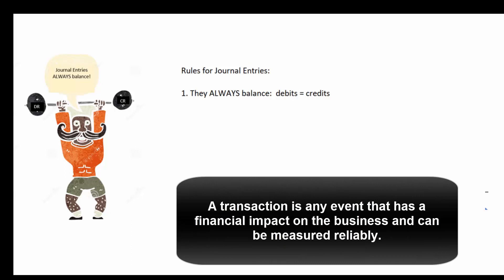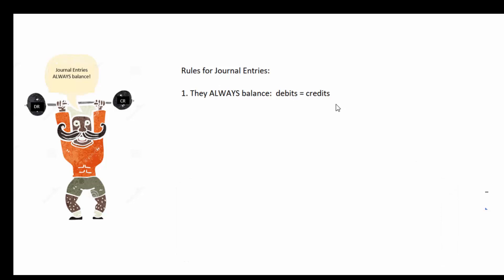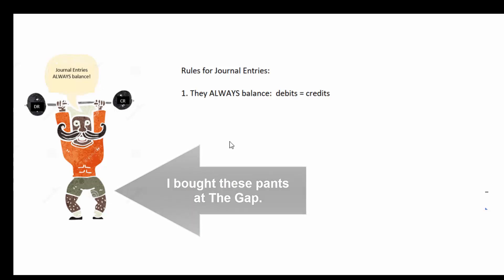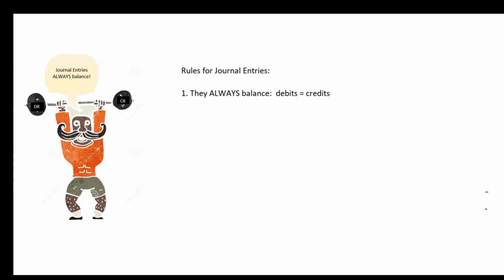I like to say there are six rules. First, they always balance. The dollar amounts of debits always equal the dollar amounts of credits in each journal entry.